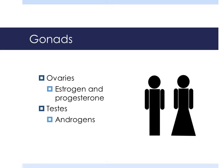Gonads are the sex organs. They release hormones in response to those hormones released by the pituitary gland. In the female, it's the ovaries which produce the hormones estrogen and progesterone. The testes are the male gonads and they produce androgens, which are male sex hormones. The main androgen is testosterone.